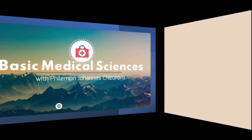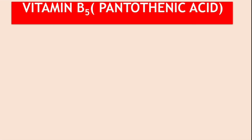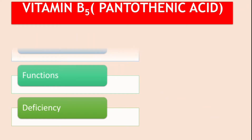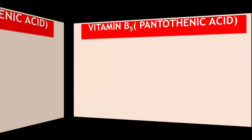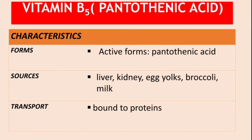In this video we are going to discuss Vitamin B5, also known as pantothenic acid. We're going to be short and precise because there is not a lot of information here, but it's not insignificant — it's an important vitamin as well. We'll talk about its characteristics, functions, and deficiency, which is very rare. Let's begin.